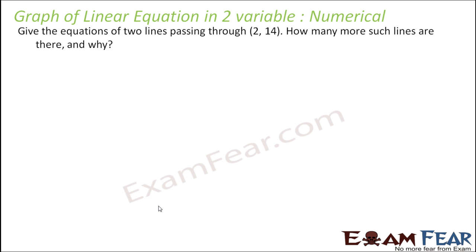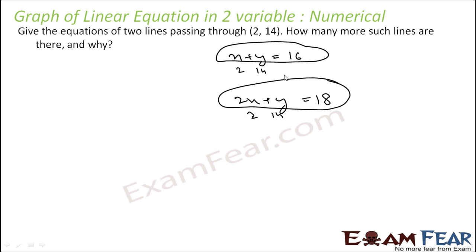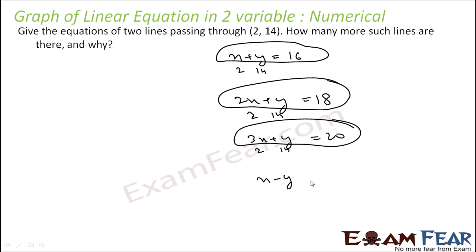Give two equations of lines passing through the point (2, 14). So many equations I can have. If I use x plus y: 2 plus 14 is 16, so one equation is x plus y equal to 16. If I use 2x plus y: 2 into 2 is 4, plus 14 is 18, that's another equation. If I try 3x plus y: 3 into 2 is 6, plus 14 is 20, that's another. If I use x minus y: 2 minus 14 is minus 12, that's another equation. So I can have so many equations.